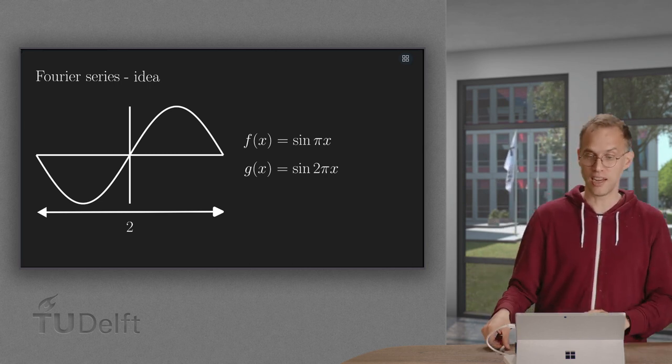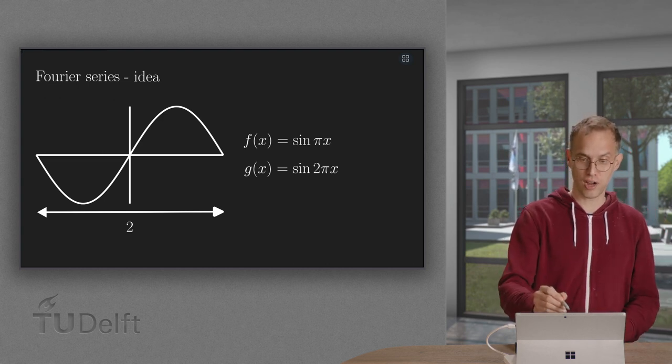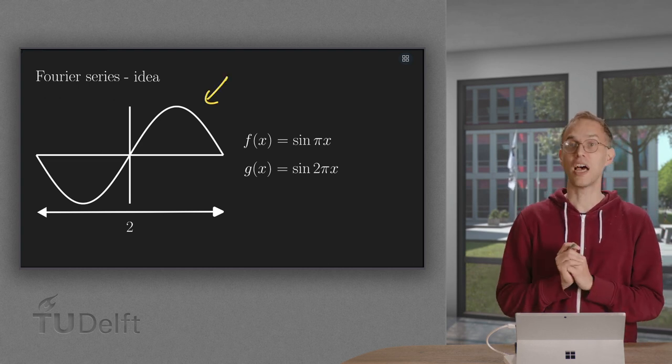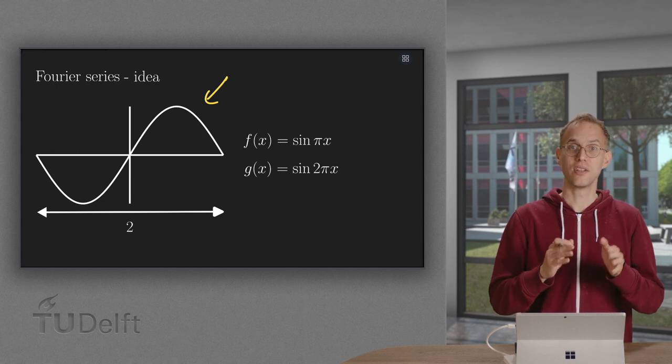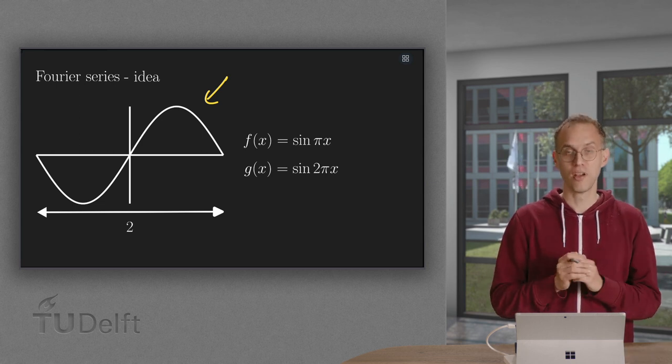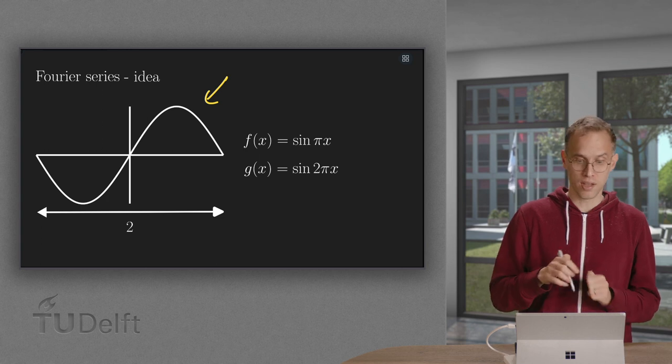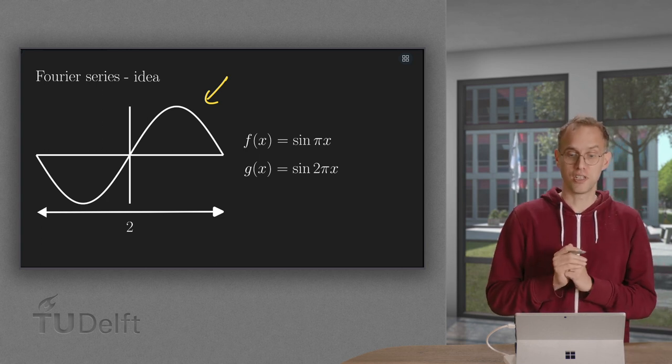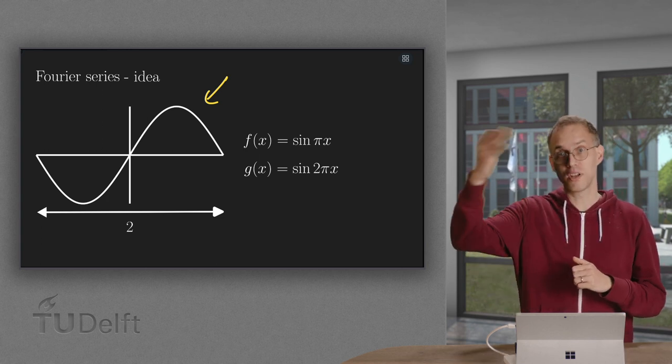Let us take a look into the idea. Here we have the graph of f(x) equals sine pi x. You see it repeats itself after a length of 2. This function has a period of 2 and is periodic.